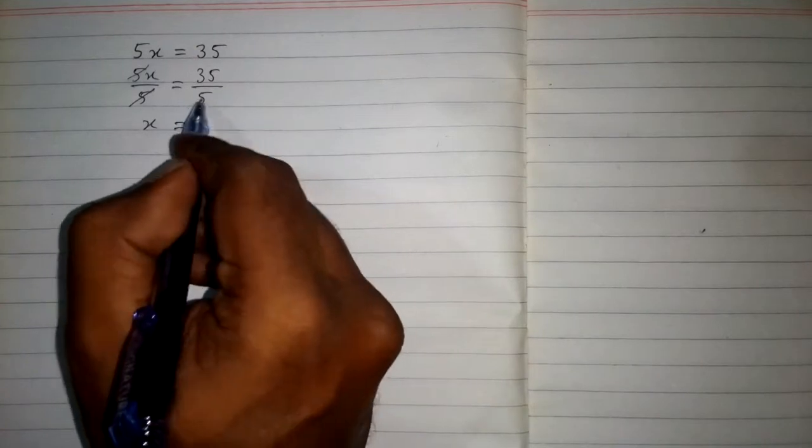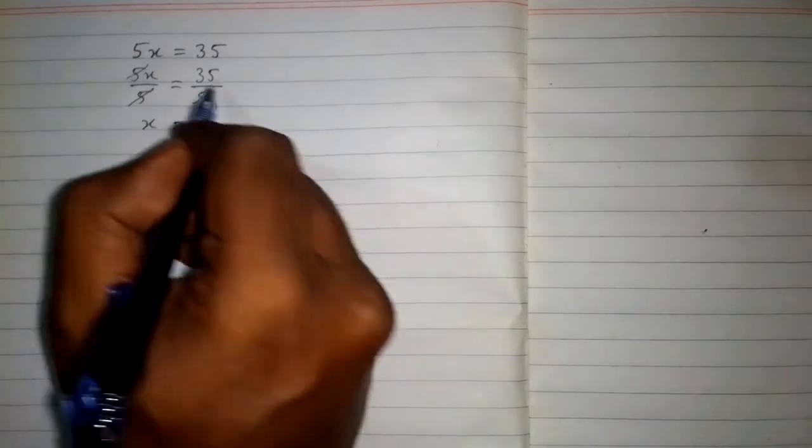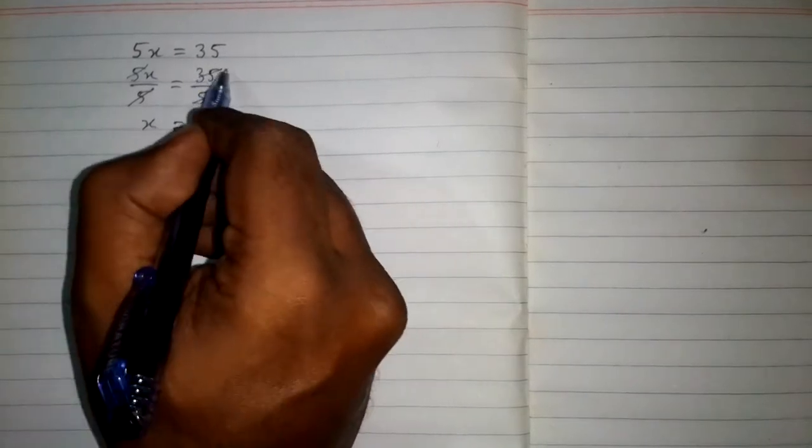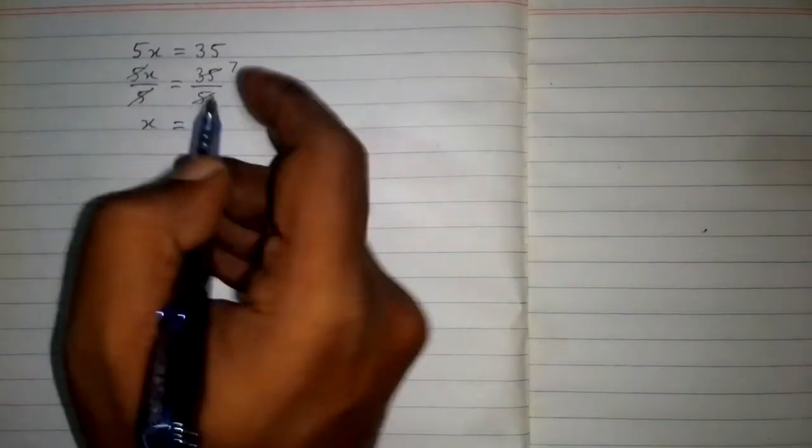Now this 5 and this 5 can be cancelled so we have x is equal to 35 upon 5. And also this 35 can be divided by 5, so we have 5 × 7 = 35, so